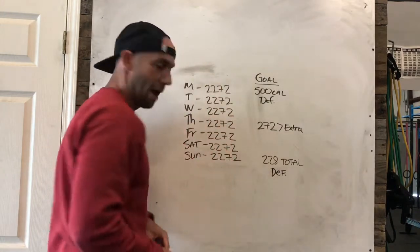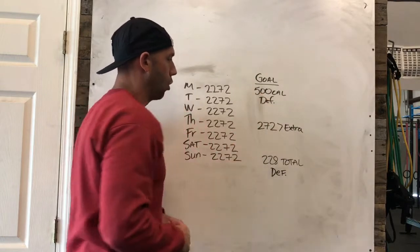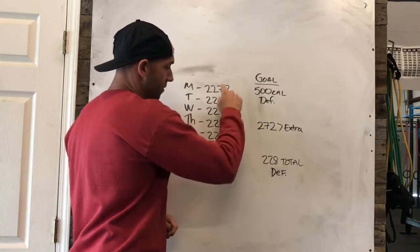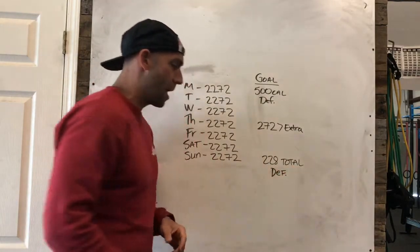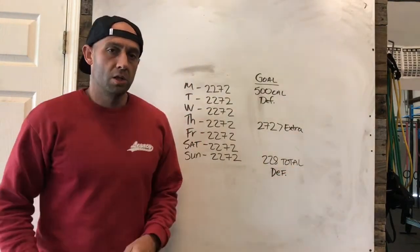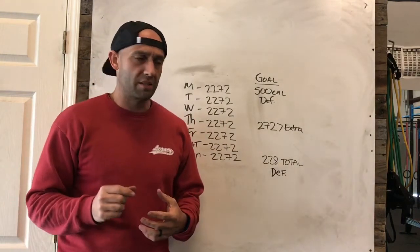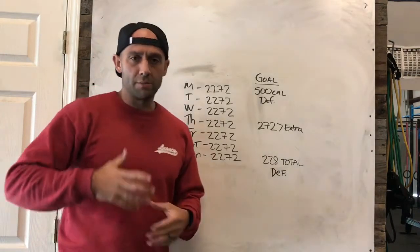So now if we take our original goal of having a 500 calorie deficit, and then we take the 272 extra calories, it leaves us with 228 for our deficit. So what that's basically going to end you with is just a little bit of weight loss, but you're going to constantly see it go up and down.